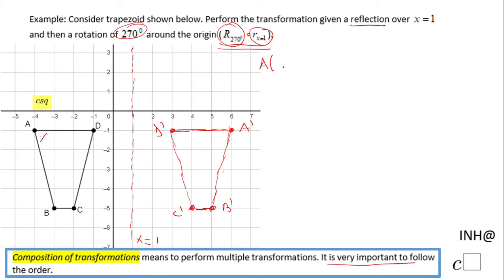A, which was negative 4 and negative 1, based on this reflection becomes A prime, which is 6 and negative 1.